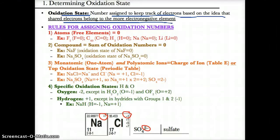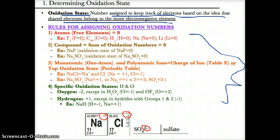Now let's talk about how to find and assign oxidation states to a specific species in chemistry. To do that, we need to keep in mind the following four rules. Rule one: atoms or free elements always have an oxidation state of zero — always.